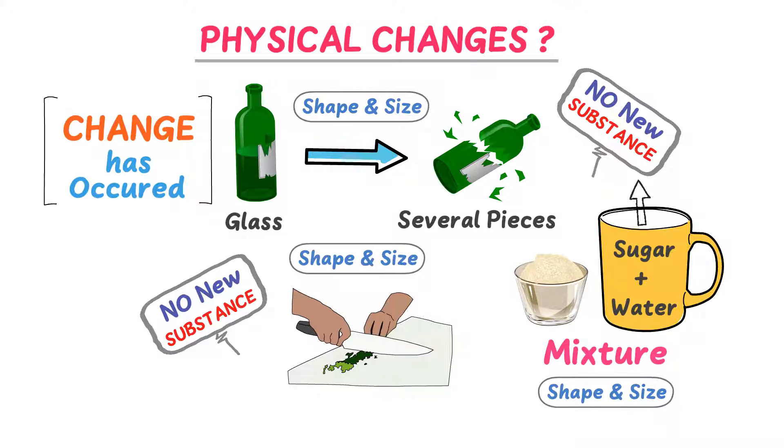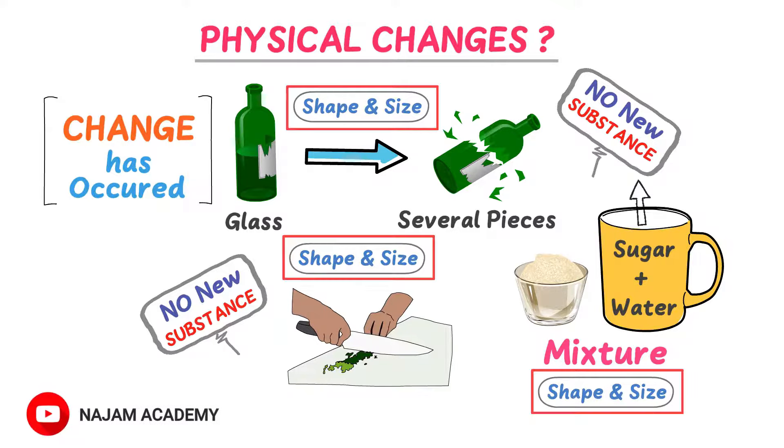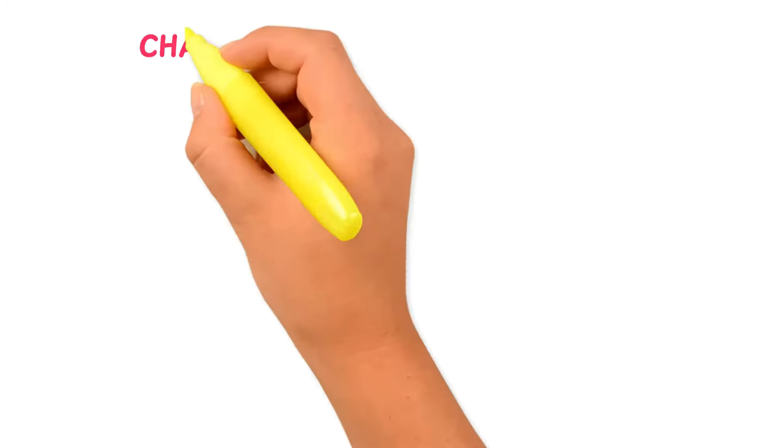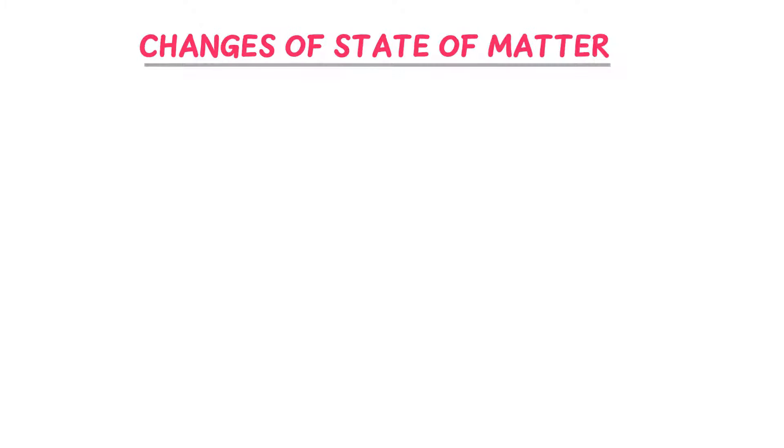So from these three examples, we learn that when changes only occur in the shape and size of an object, and we do not get any new thing or new substance due to this change, we call such type of changes as physical changes. Now let me also teach you some common processes in which physical changes occur like change of states of matter.